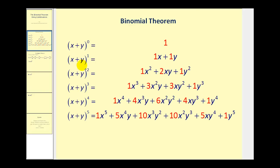Let's first take a look at the patterns we can recognize when we expand the binomial x plus y. For example, if we take a look at the quantity x plus y raised to the third, notice the variable part of the first term is x to the third, and the next term has x to the second. So the exponent has decreased by one, but then we start picking up factors of y.